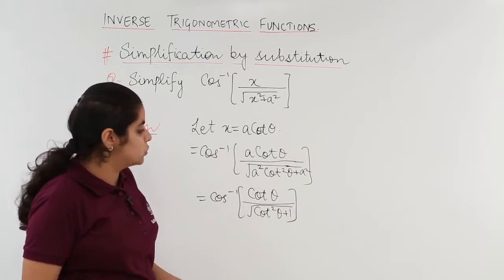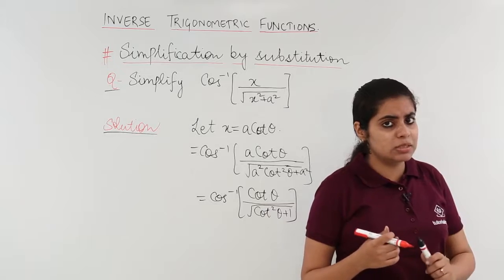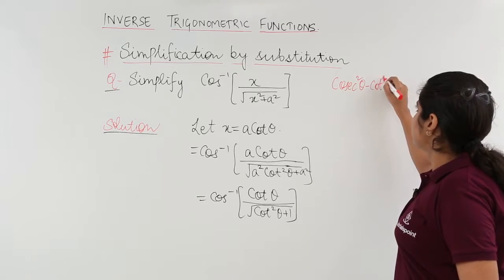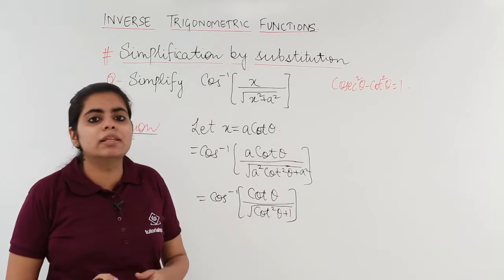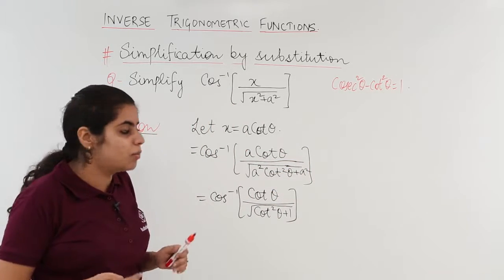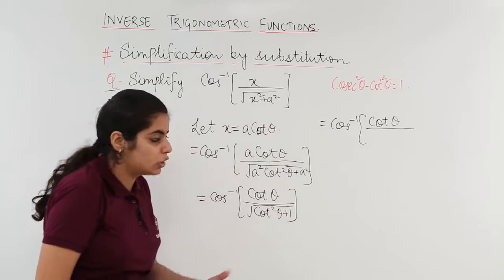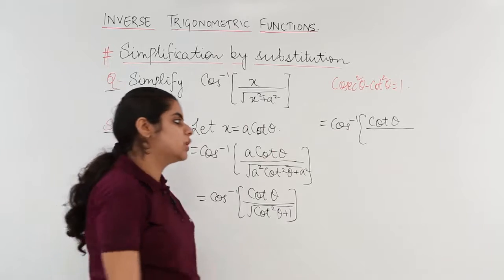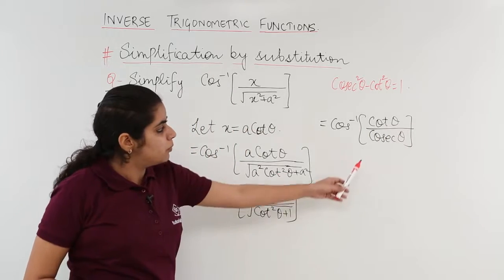Now, what is the formula for cot²θ + 1? From our earlier classes, we know that cosec²θ − cot²θ = 1, so cot²θ + 1 = cosec²θ. Using this formula, the denominator √(cot²θ + 1) becomes √(cosec²θ), which simplifies to cosec θ. So we now have cos inverse of cot θ over cosec θ.